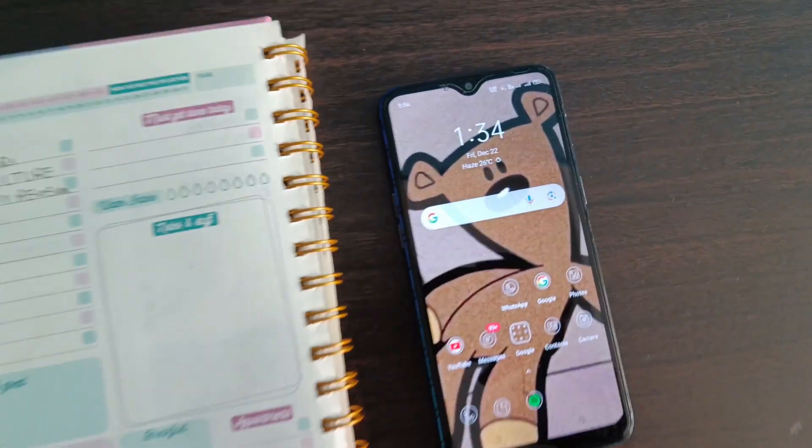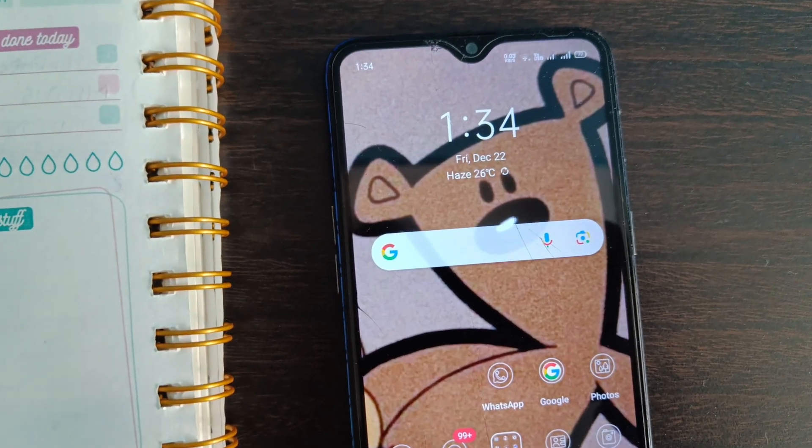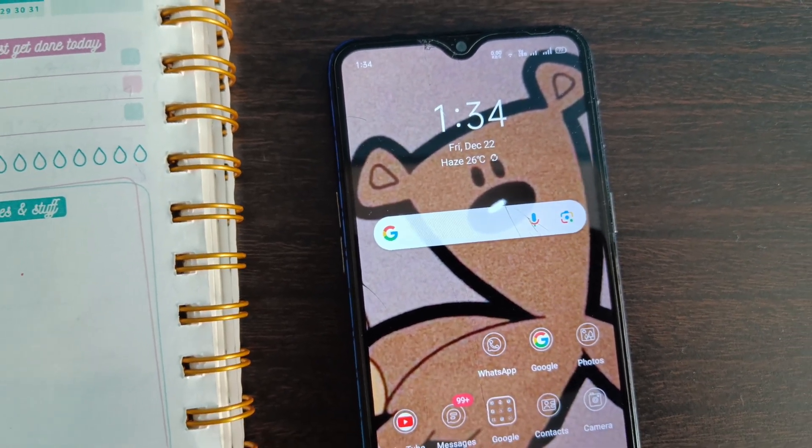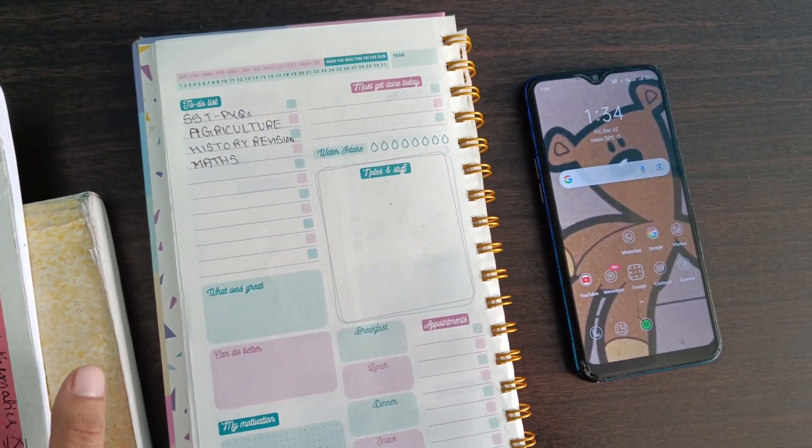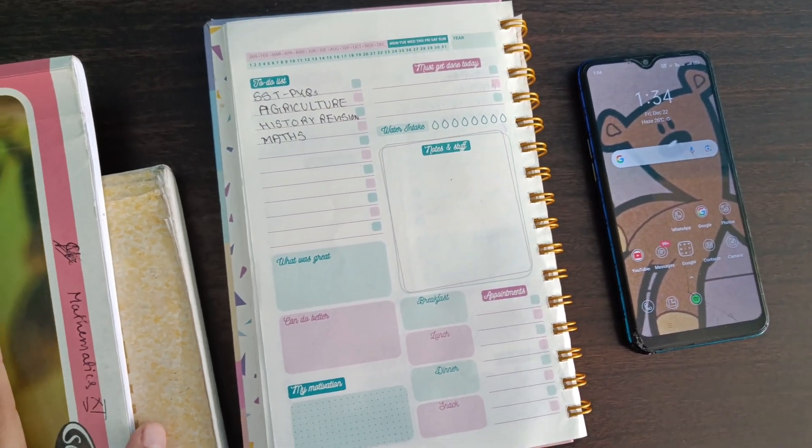Hi everyone, so today is Friday, 22nd December, and it is currently 1:34 PM. This is my to-do list for today. Right now I will start off with mathematics, chapter statistics. I'll do it for one hour 30 minutes.